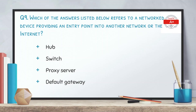Question number 9: which of the following answers refers to a network device providing an entry point to another network or the internet? The options are hub, switch, proxy server, and gateway. The correct answer is gateway. As the name indicates, a gateway is the gateway to another network or to the internet.